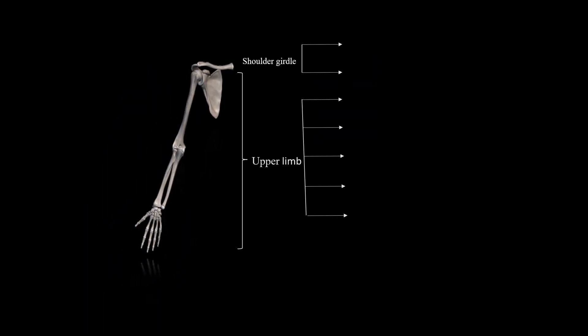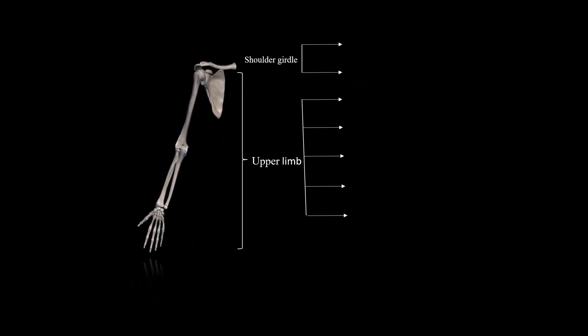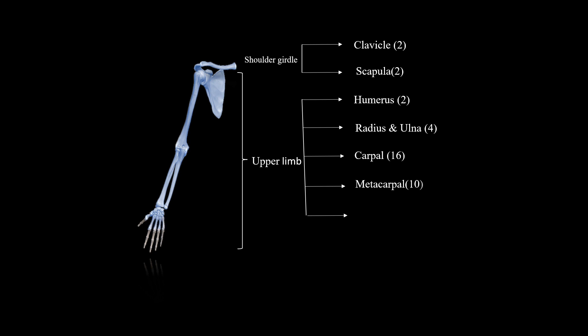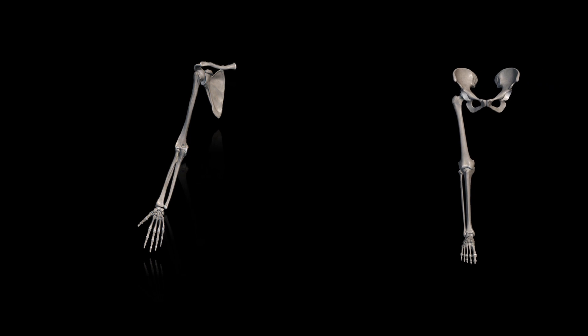Now focus on the upper limb with shoulder girdle. The shoulder girdle includes the clavicle and scapula, and the rest of the upper limb includes the humerus, radius and ulna, carpal, metacarpal, and phalanges. These are 64 bones in the upper limb with shoulder girdle.